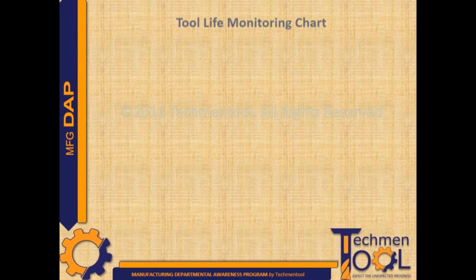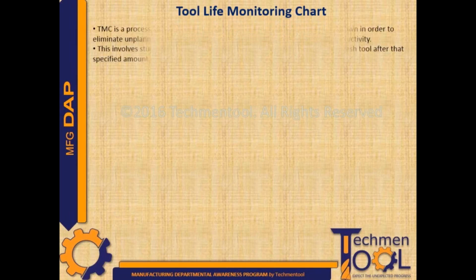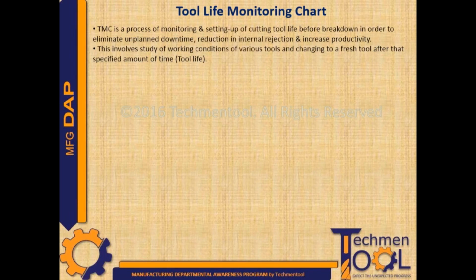Let us discuss about tool life monitoring chart. Tool monitoring chart is a process of monitoring and setting up of cutting tool life before breakdown in order to eliminate unplanned downtime, reduction in internal rejection, and increase productivity. This involves study of working conditions of various tools and changing to a fresh tool after a specified amount of time.